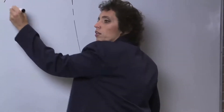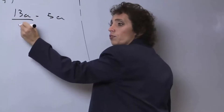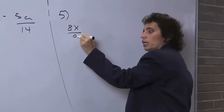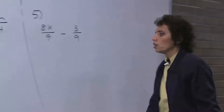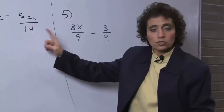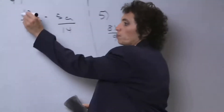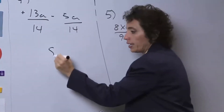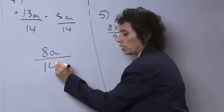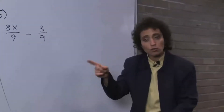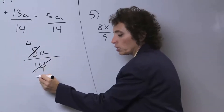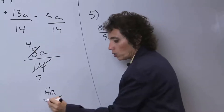Let's look at problems 4 and 5. Number 4 is 13a over 14 minus 5a over 14. Number 5 is 8x over 9 minus 3 ninths. Look for a common denominator — we have it. So now we just deal with the numerators. I have 13a's, I owe you 5a's, I have 8a's, all over 14. But remember, try to reduce if you can — 2 goes into both. 2 goes into 8 four times, 2 goes into 14 seven times. So that's 4a over 7.